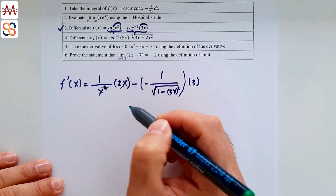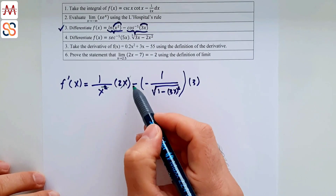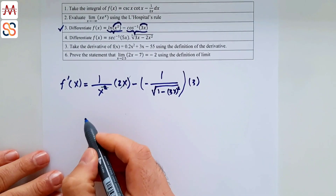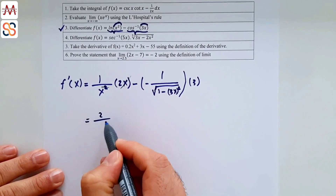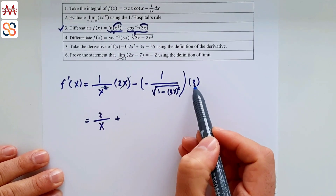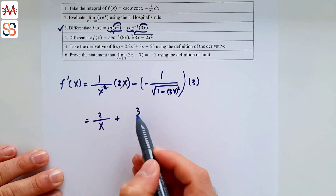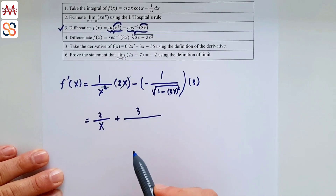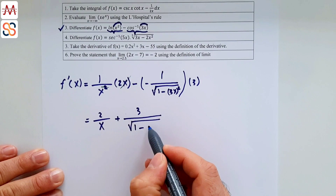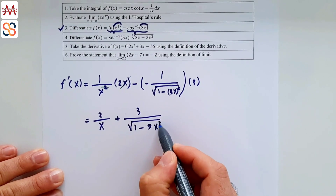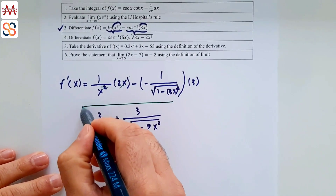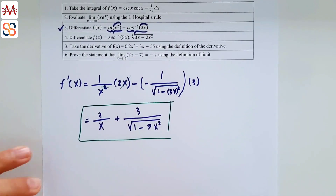Simplifying: in the first term, x in 2x cancels with x² leaving 2/x. The two minus signs cancel each other. So the final answer is f'(x) = 2/x + 3/√(1 - 9x²).